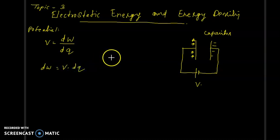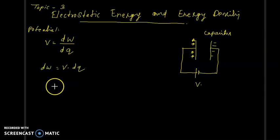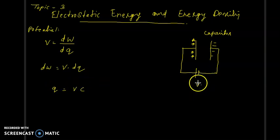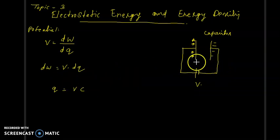During the last module — the third module — we studied the relationship between Q and V. So Q is nothing but V into C. So V is the voltage, and C is the capacitance. The capacitance is the constant of this capacitor.